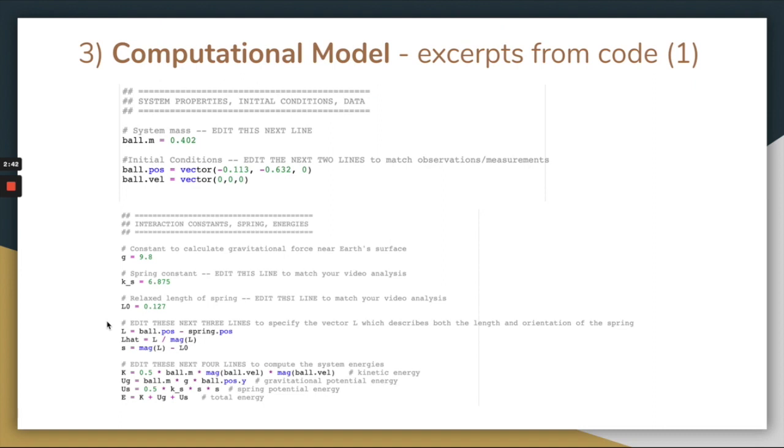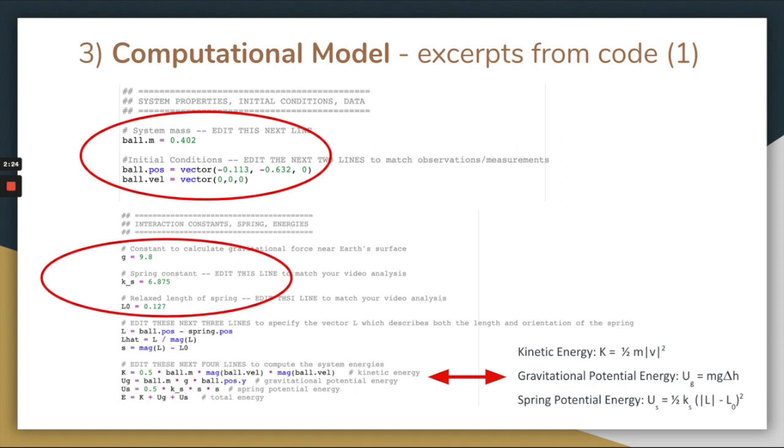Here are two excerpts from my code for the computational model. I first set the mass of the ball and its initial position and velocity vectors. I then defined g, the acceleration due to gravity close to Earth's surface, the spring constant which I calculated using the period of oscillation in the y direction, and L0, the relaxed length of the spring. Finally, I computed the system energies using the formulas from the previous slide, and set the total energy to be the sum of these individual energies.